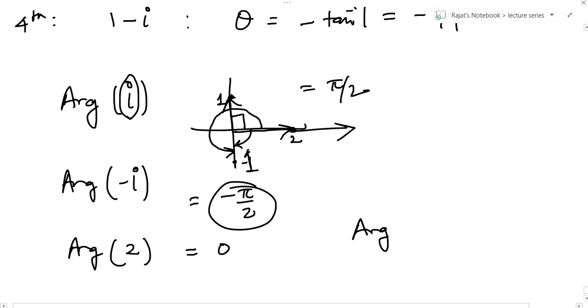What will be the argument of minus 2? So the point will be here. The angle will be π. You can say π, you can say minus π, it doesn't matter. So this is it, these were the basic ideas.